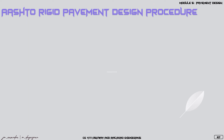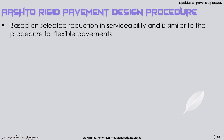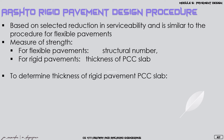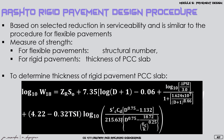For the AASHTO rigid pavement design procedure, it is based on the selected reduction in serviceability and is similarly structured to the procedure for flexible pavements. The only difference is the measure of strength. For flexible pavements, design depends on the structural number based on layer thickness and materials. For rigid pavements, design depends on the thickness of the PCC slab. To determine the thickness of the rigid pavement, we follow the rigid pavement design equation, which is almost similar to the flexible pavement design equation with some changes.